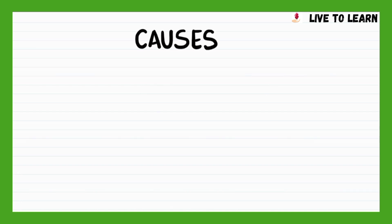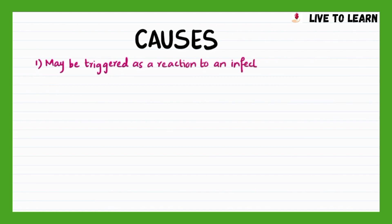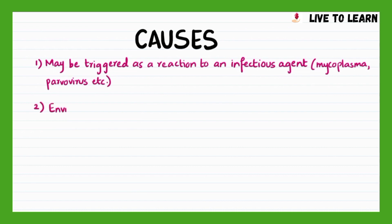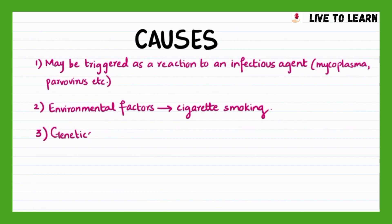Rheumatoid arthritis may be triggered as a reaction to an infectious agent, such as mycoplasma or parvovirus. Of the environmental factors, only cigarette smoking seems to be associated with rheumatoid arthritis. People with HLA-DR1 and HLA-DR4 genes are more susceptible to developing rheumatoid arthritis.